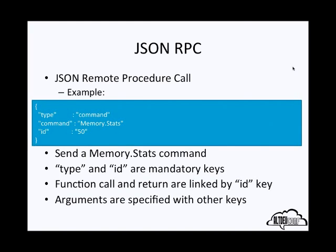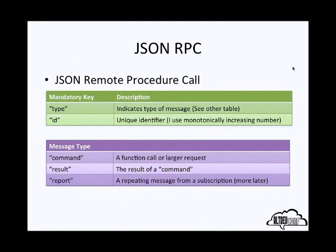The ID key is mandatory because it's how function call and returns are linked. If you send a message with an ID of 50, the game engine's reply will also have ID 50, allowing very simple linkage between a call and a reply. I support three message types: command (a function call or larger request), result (the result of the command), and report (a repeating message from a subscription). The ID is a unique identifier for each message — I use a monotonically increasing number, which is simple to generate. The ID only has to be unique per connection, not globally.